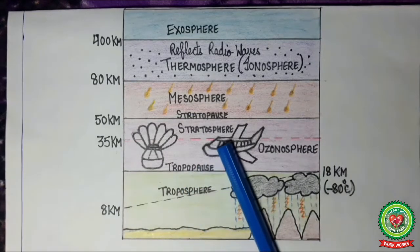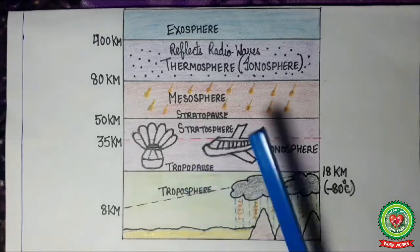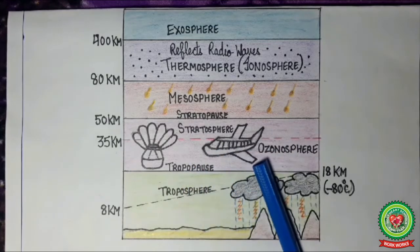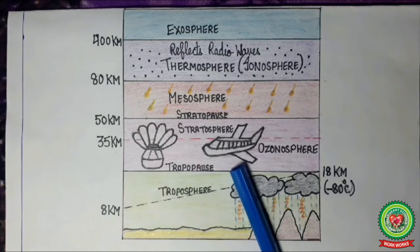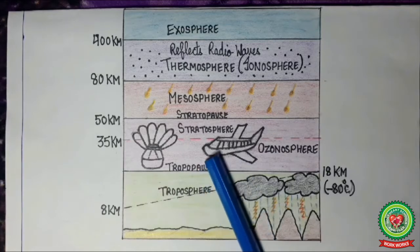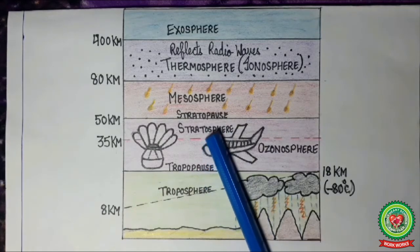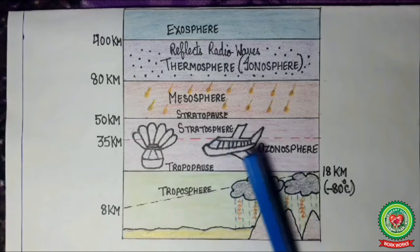As we enter the stratosphere, the temperature starts increasing in this layer due to the presence of ozone gas, which absorbs the harmful ultraviolet rays coming from the sun. By the time we reach the stratopause, the temperature rises back up to 0 degrees Celsius from minus 80 degrees Celsius.